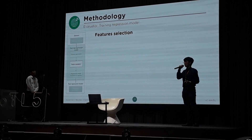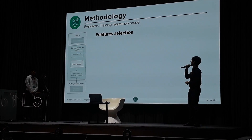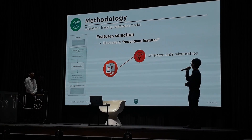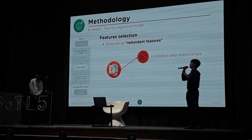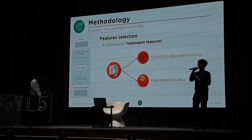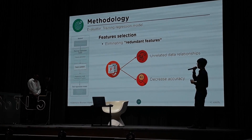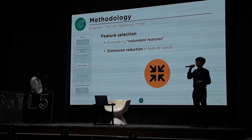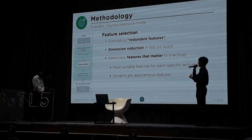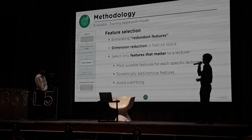This is to generate more features. But how do we choose the most meaningful features? We call this section feature selection. Because there are so many features, we want to reduce the list, since unrelated features introduce unrelated data relationships that we want to eliminate. Also, features not relevant to the lecturer tend to decrease the accuracy of the training model. So we introduced dimension reduction, dynamically adding and removing features from the list according to the lecturer, to avoid overfitting.